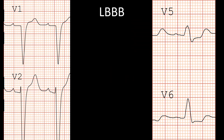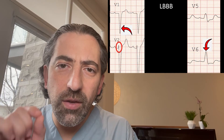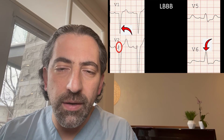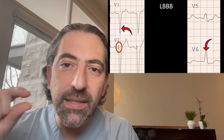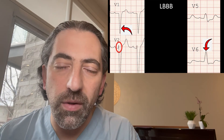Here's a look at the precordial leads in left bundle branch block. Again, you do see a small R wave in lead V2, but it's very small with a duration less than half a small square. But overall, you get a QS complex in lead V1 and a broad R complex in lead V6.